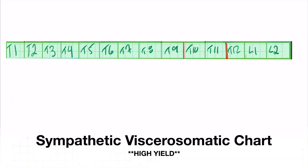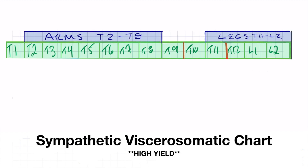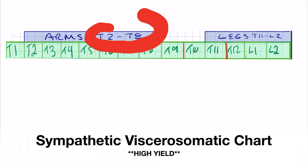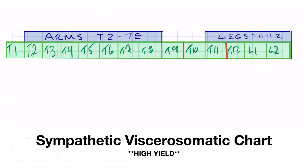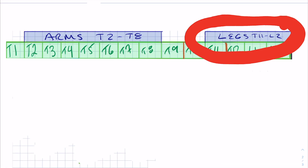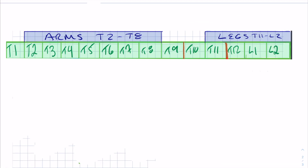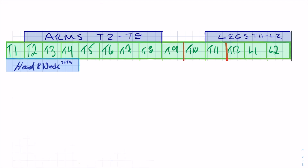Here in this chart, we're going to be focusing on T1 through L2, which are going to be your most common questions. If you get any questions about the upper extremities, the answer is going to be somewhere between T2 and T8. For lower extremities, that's going to be between T11 and L2. If you get questions about the head and neck with regards to which segment would show a viscerosomatic reflex, the answer will usually be between T1 and T4 — that makes sense since the head and neck is at the top of the body.